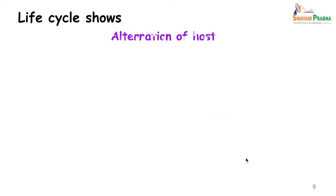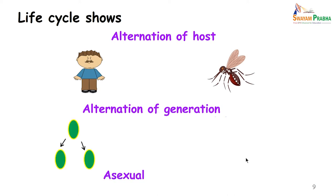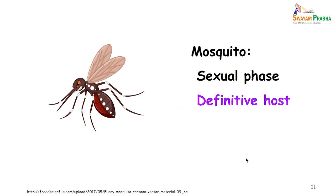The life cycle of Plasmodium shows an alternation of hosts — the two hosts involved are man and the mosquito. It also shows an alternation of generations, meaning there is an asexual cycle as well as a sexual cycle. The asexual phase occurs in man, and therefore man is considered the intermediate host. The sexual phase occurs in the mosquito, making the mosquito the definitive host.